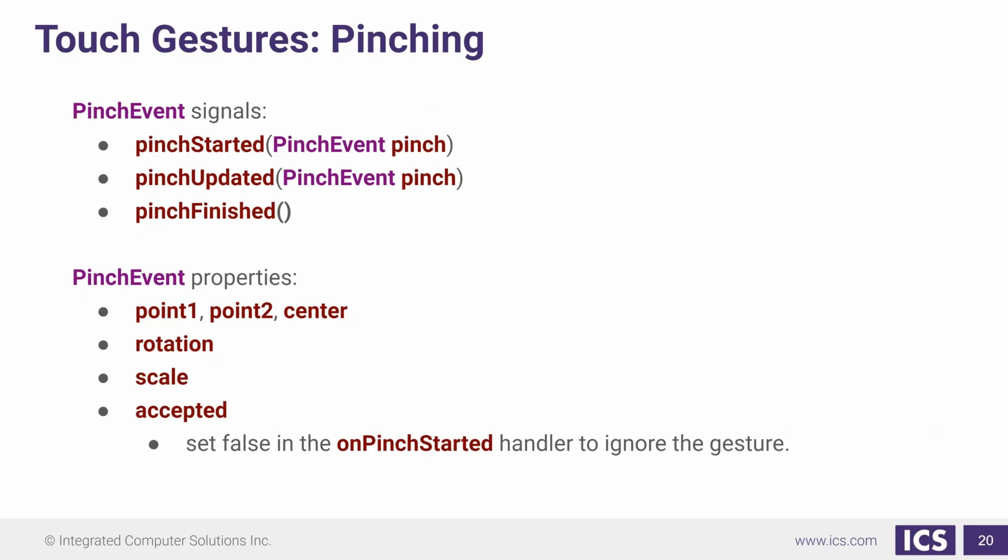Now, there are some signals that we can use for different kinds of behavior here. We might want to initialize some kind of property or start an animation when we start the pinch. For that, we can use onPinchStarted. And then we can pass the argument to determine if the pinch event is the one you're expecting or not. We also can do update. Same kind of deal. If you want to do something while they're updating, pinchFinished, you can have an animation.